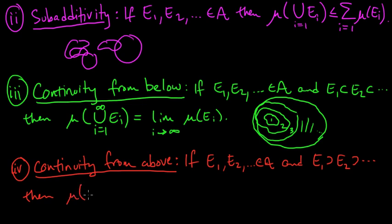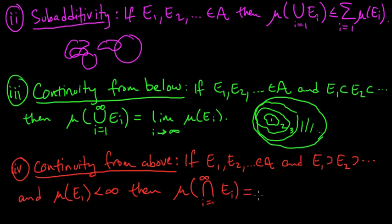Then, the measure of the intersection—oh, I'm missing, of course, I forgot the important condition. There's an extra condition that we have to assume in this case. So it's descending and further, the measure of E₁ is finite, or the measure of one of them is finite. But let's say the measure of E₁ is finite. Then we have that the measure of the intersection of all of them equals the limit, as i goes to infinity, of the individual measures.